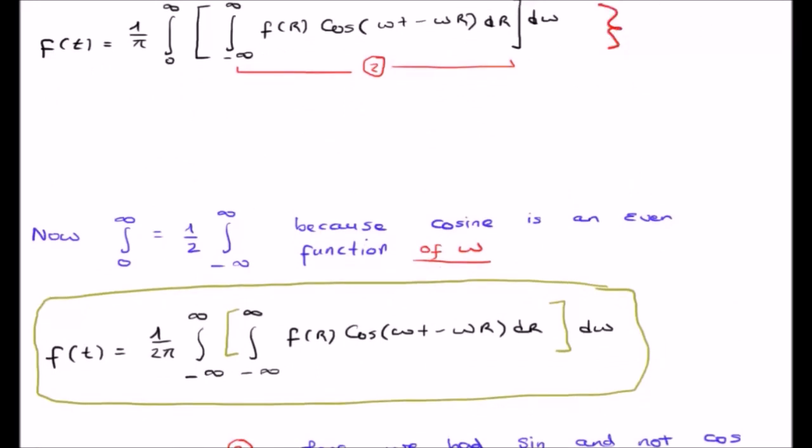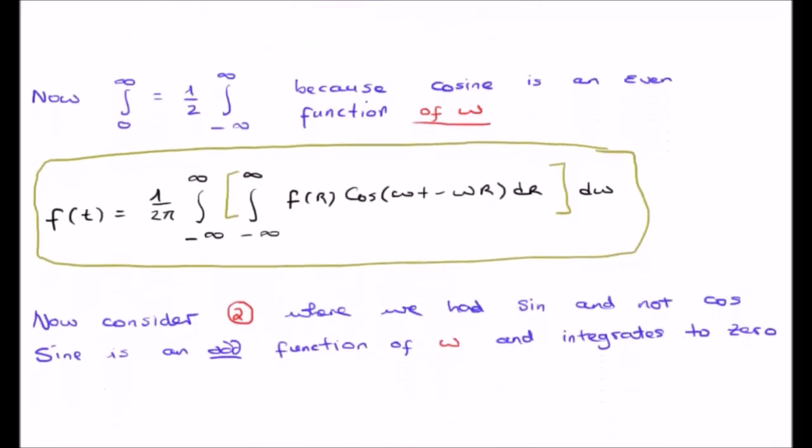So let's repeat this because it's quite a subtle step. Because in this particular expression here, cosine is an even function of omega, we were able to replace the integral going from zero to infinity by half of the corresponding infinite integral.